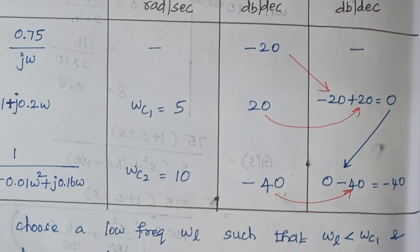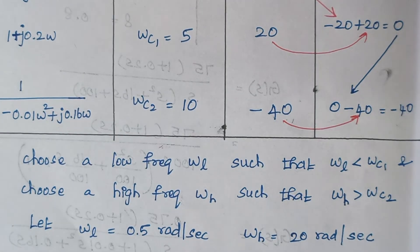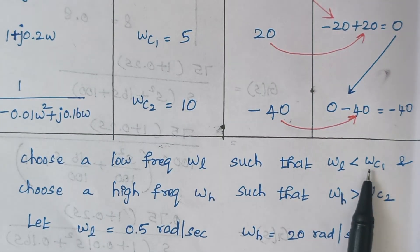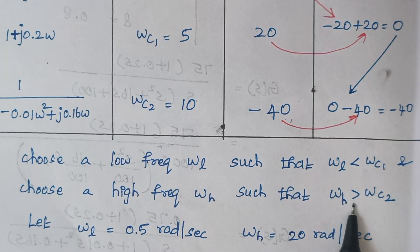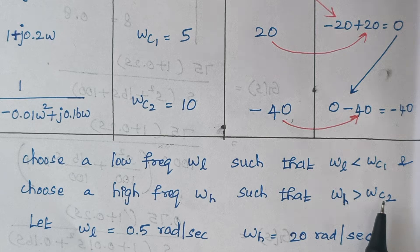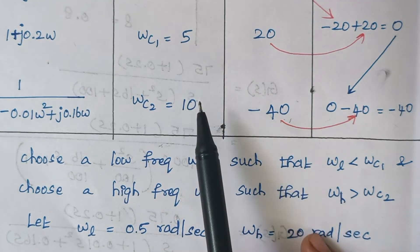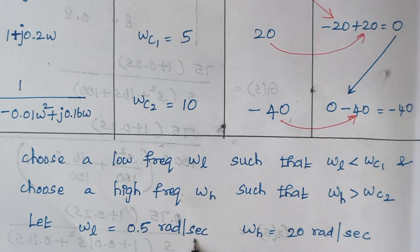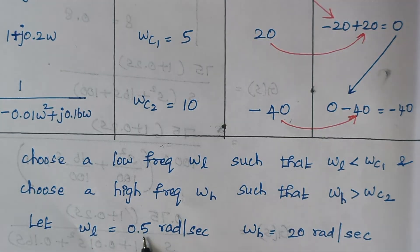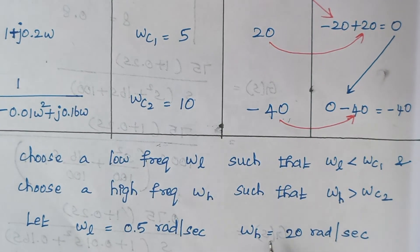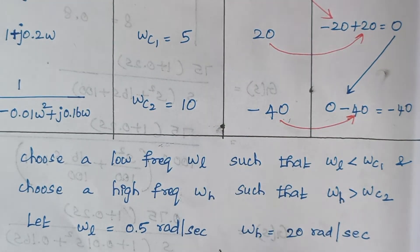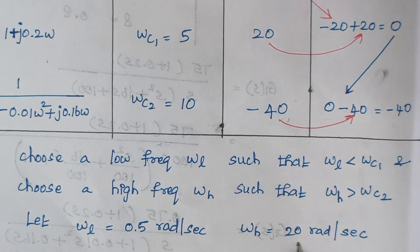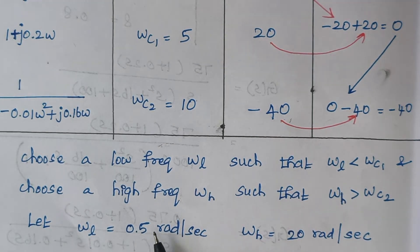We choose two frequencies: one less than the first corner frequency and one greater than the second corner frequency. Our corner frequencies are 5 and 10. We take ωL = 0.5 rad/s — any value less than 5 is acceptable, such as 1 or 2. For ωH, we take 20 rad/s; you could also take 50, 100, or 200. The book uses 20, so we follow that.